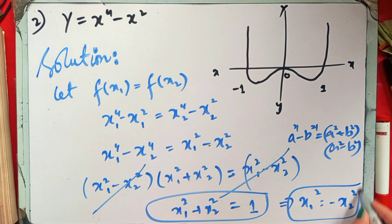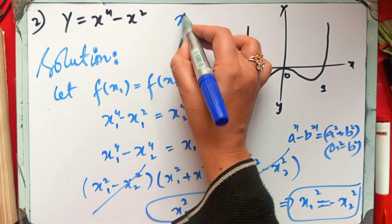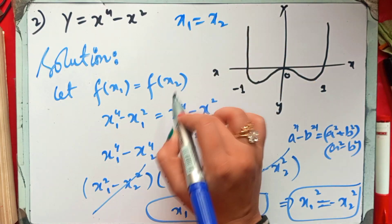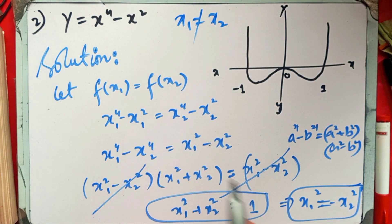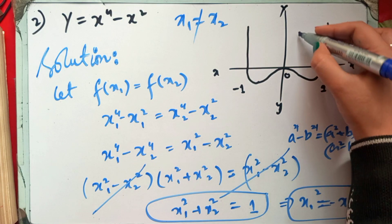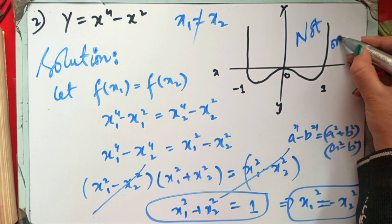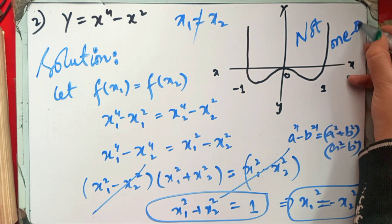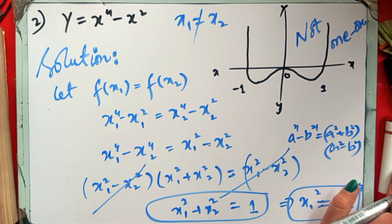The result does not satisfy the condition where x₁ = x₂. Since we cannot conclude x₁ = x₂, this means this is not a one-to-one function. This is not a one-to-one function, and with this, question number 2 is solved. Let's move to question number 3.